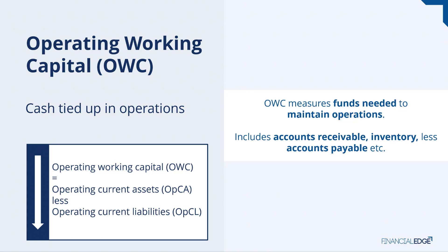Accounts receivable is cash tied up with your customers. But if you also owed 10 to a supplier, that's really tying up some of your supplier's cash — you've got your supplier's cash of 10 sitting in your bank. So cash tied up would be the 500 of accounts receivable and 500 of inventory — that's 1,000 of cash tied up — less the 10 of your supplier's cash. So OWC in that example would be 990.